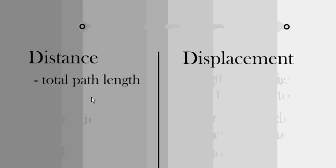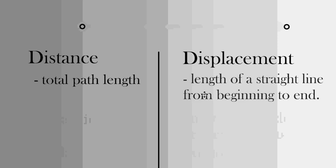To begin with, distance is the total path length. So for a curved path, we add up all the sections. Displacement is the length of a straight line from the beginning point to the end point.